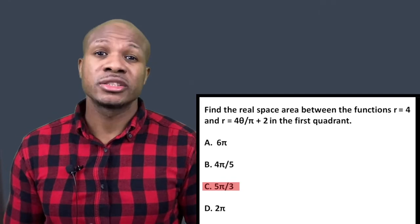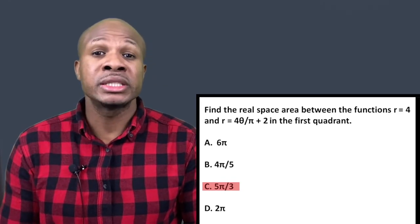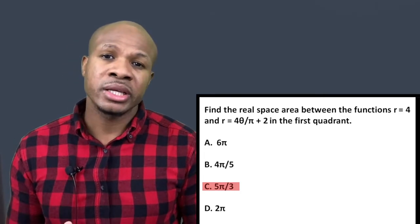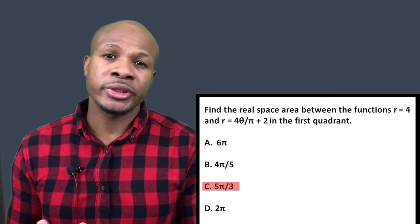The answer is choice C: 5π/3 — the area of the region between r = 4 and r = 4θ/π + 2 in the first quadrant. This was a more advanced topic, but on this channel we cover a wide range from beginner to advanced level. If this video was helpful, please give us a like, leave a comment, subscribe to the channel, and we'll see you next week!